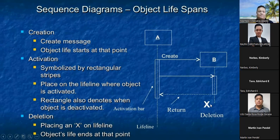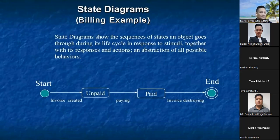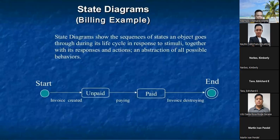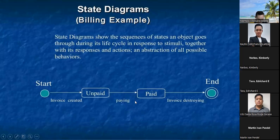Here's an example of a sequence diagram showing object life span. State diagram: it shows the sequences of states an object goes through during its life cycle in response to events, together with its responses, actions, and abstraction of all possible behavior. For example: you start, then the endpoint has been created but not yet fed — it shows 'unfed.' Then, pinging. After pinging, it shows 'fed.' Then endpoints grow, and the conditions end — start and end. That is the state diagram.